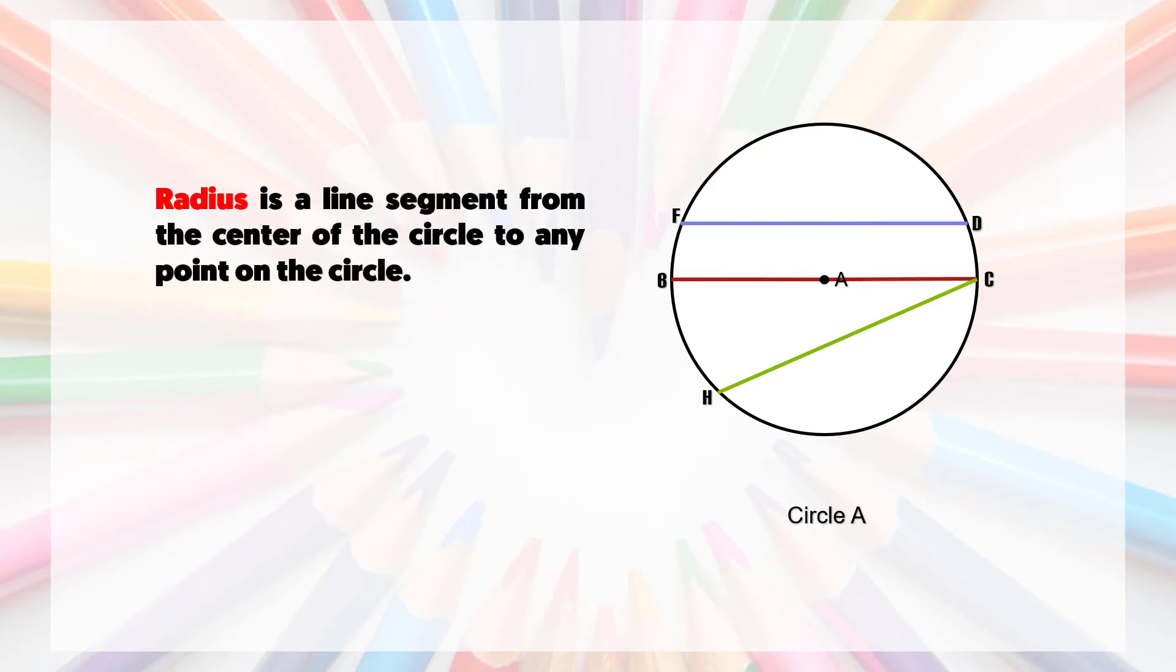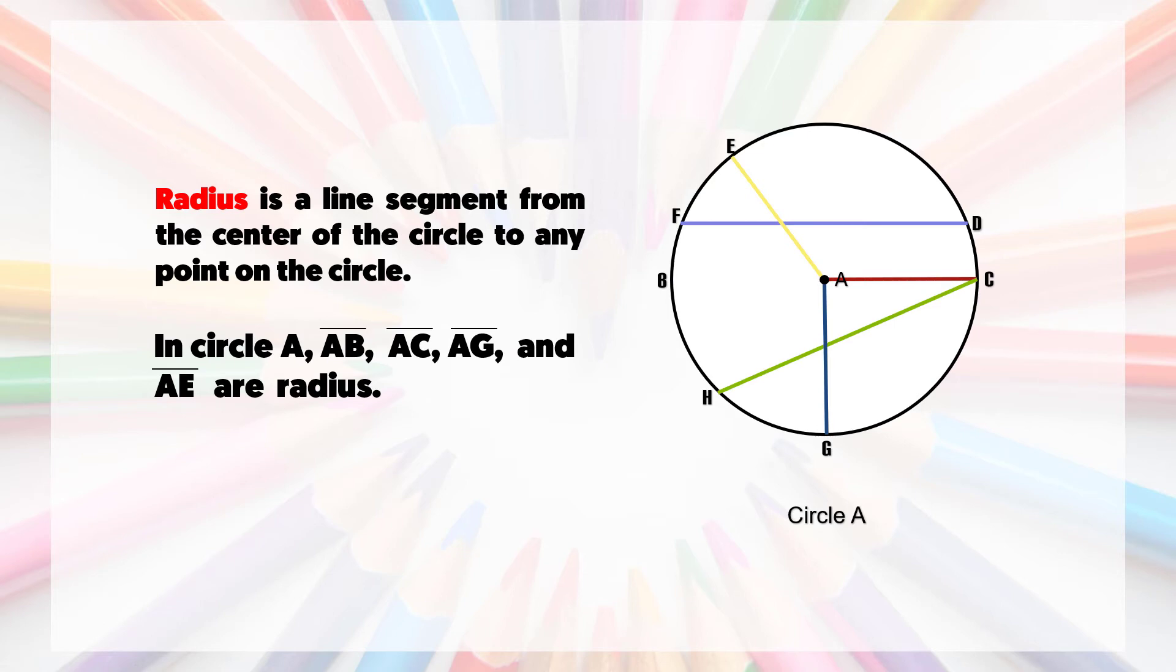Number three, radius: It is a line segment from the center of the circle to any point on the circle. In the given example, line segment AB, line segment AC, AG, and line segment AE are radii.